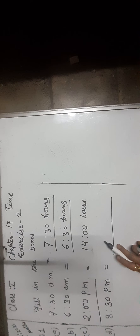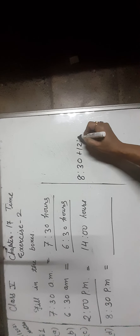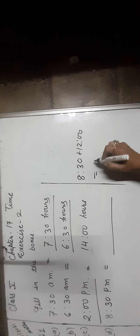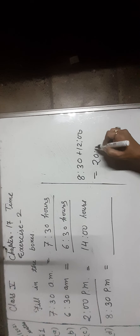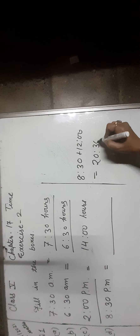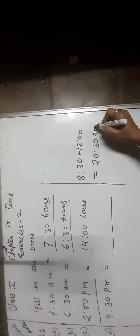Let us convert 8:30 PM into 24-hour clock. Add 12 to the time in PM to get the 24-hour clock time. 12 plus 8:30 equals 20:30 hours.